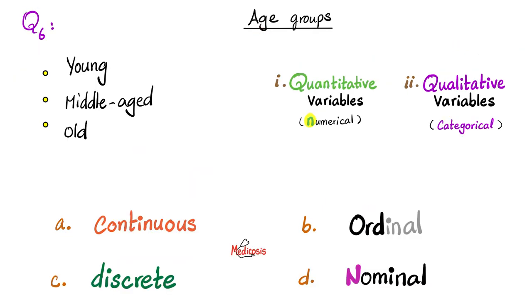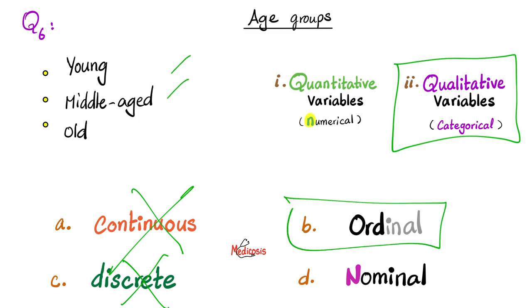Next, age groups. We divided the population into the young, the middle-aged, and the old. Is this quantitative or qualitative? What do you think? Well, these are not numbered. So I'm going to say qualitative or categorical variables. Next question. Since they are qualitative, do you think they are ordinal or nominal? These are ordinal because they are ordered, as you see.